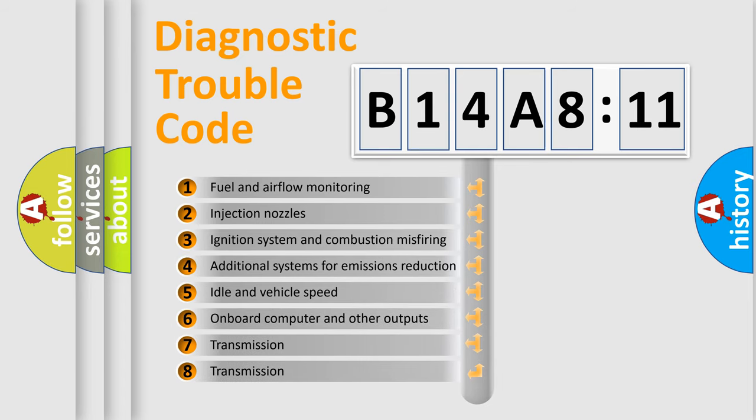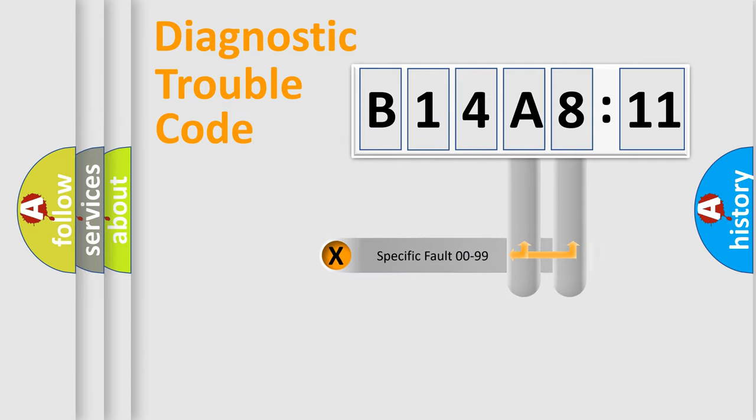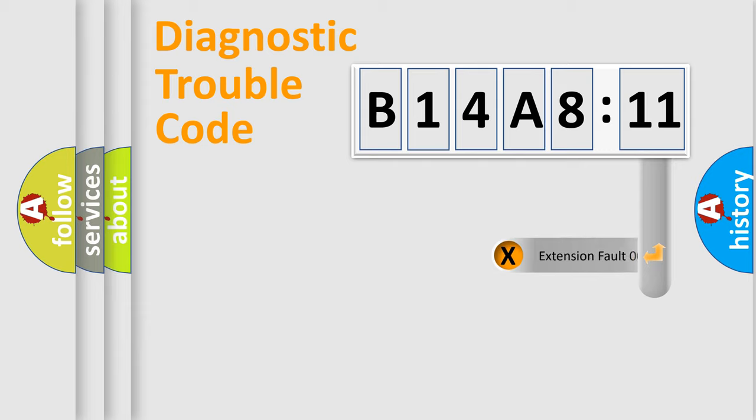The third character specifies a subset of errors. The distribution shown is valid only for the standardized DTC code. Only the last two characters define the specific fault of the group. The add-on to the error code serves to specify the status in more detail.